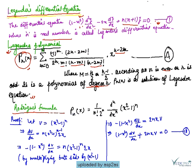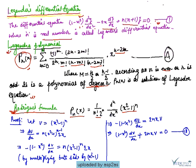Now we are going to prove a very important formula — that is the Rodrigues formula. Its proof is very important. The Rodrigues formula is: Pn(x) equals 1 over (n! · 2^n) times d^n/dx^n of (x²-1)^n.